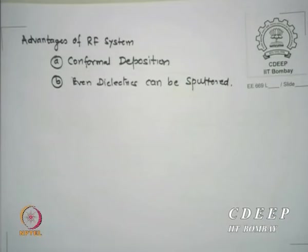Instead of trying to anneal the damage, you can reduce the damage by another process which we will now discuss: chemical vapor deposition. There we will not use physical bombardment. The advantage of the RF system is conformal coverage and even dielectrics can be sputtered.